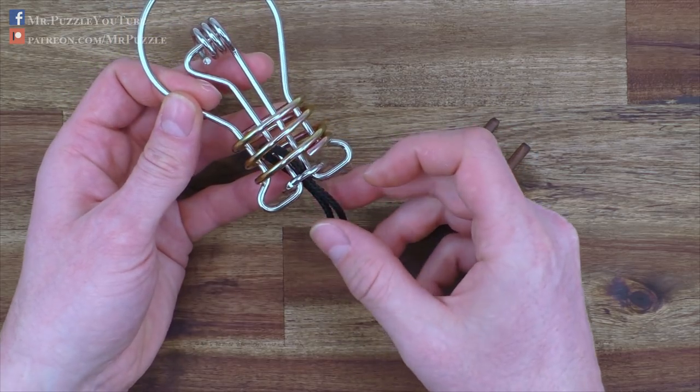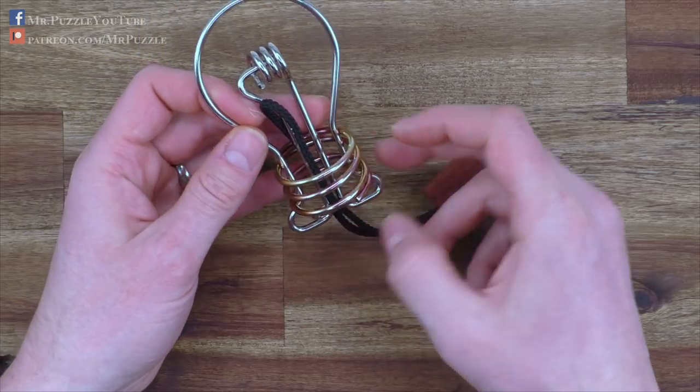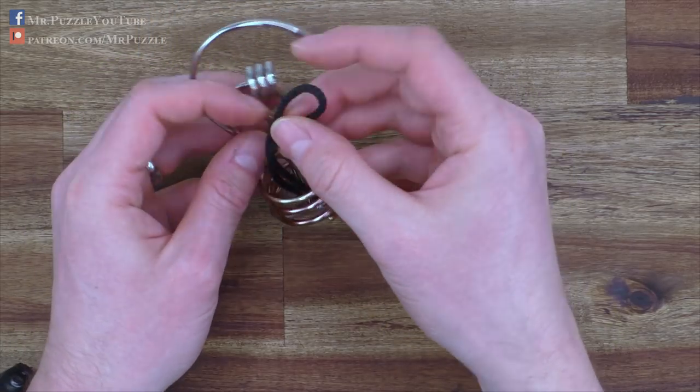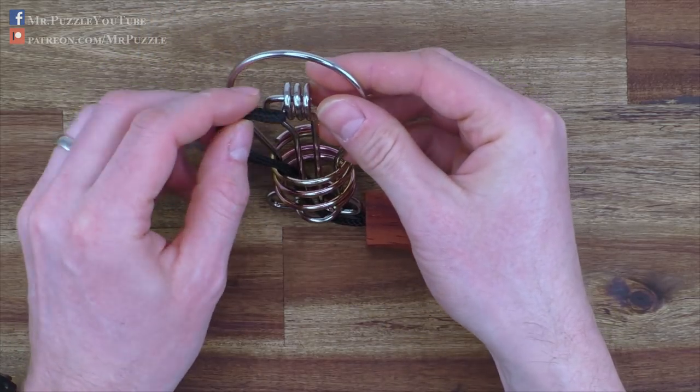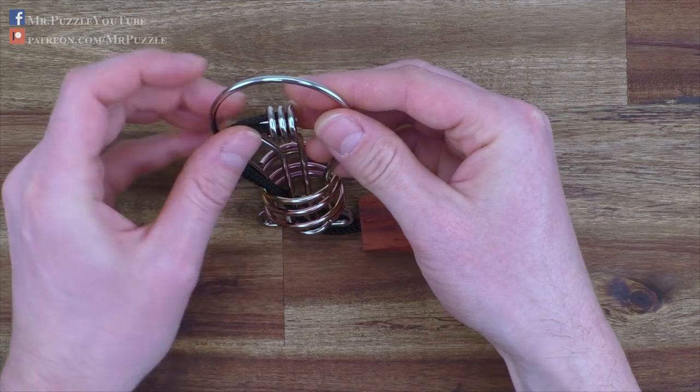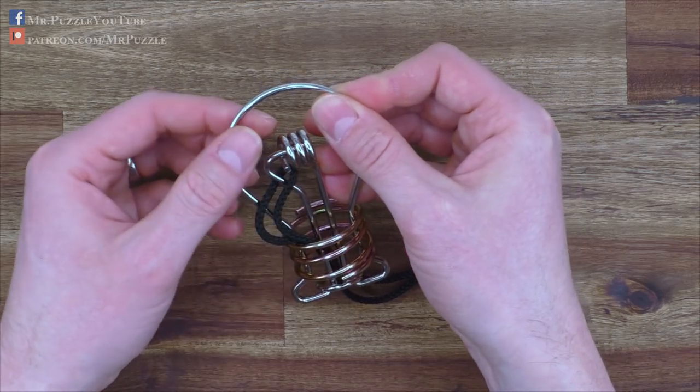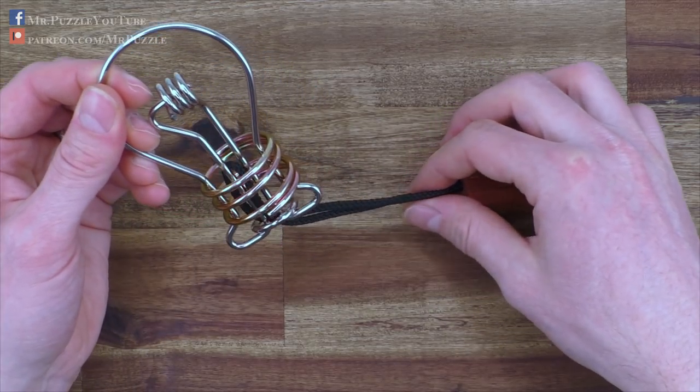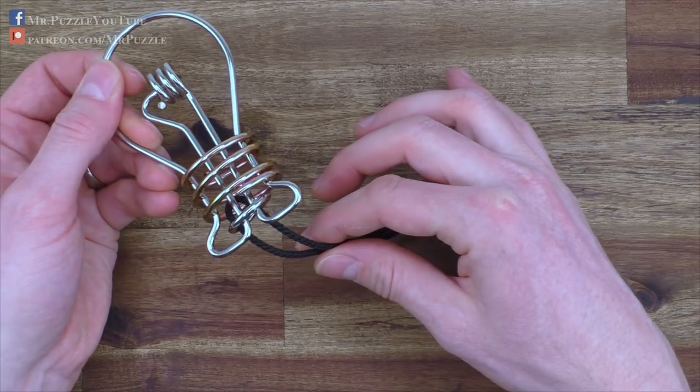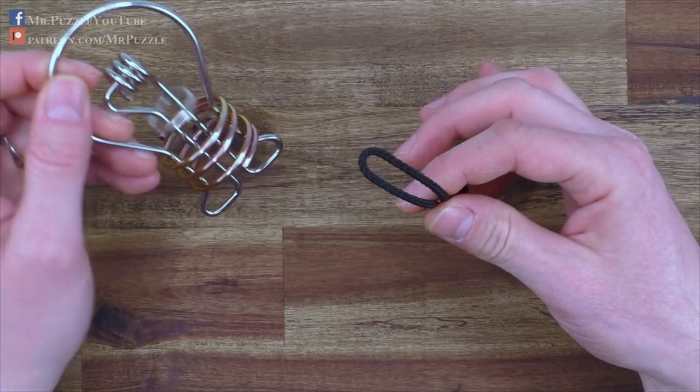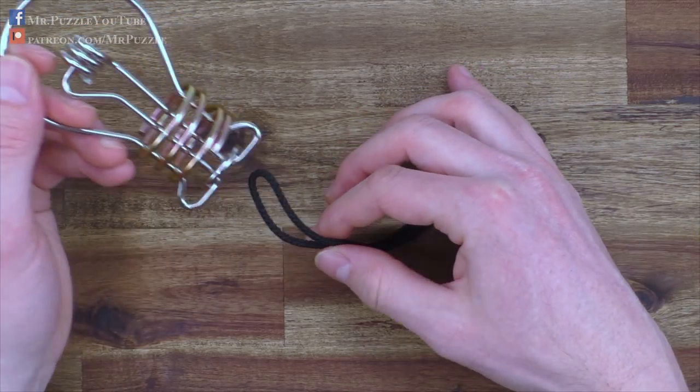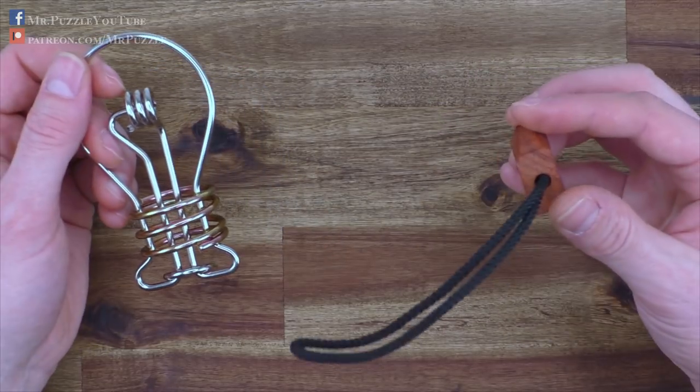And if we do so, and we just move around this wire here again, this time we will not get back into the previous position, but we will be just able to pull the rope outside down here, through the ring. And that's it. Puzzle is already solved.